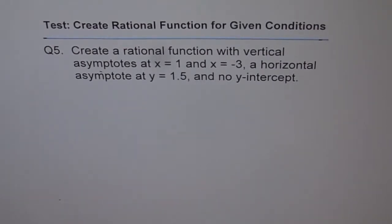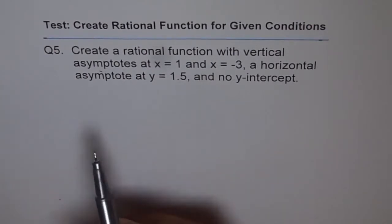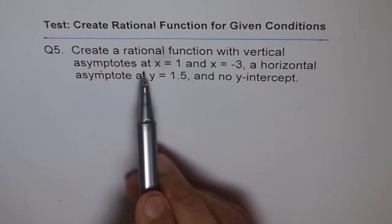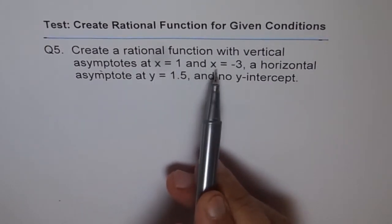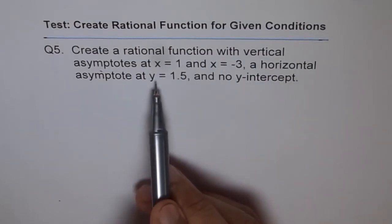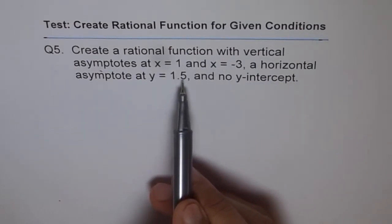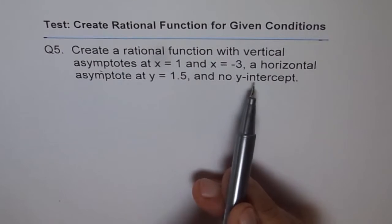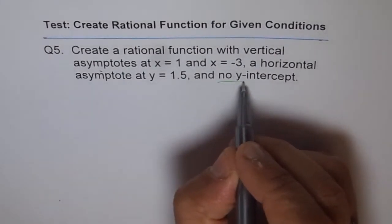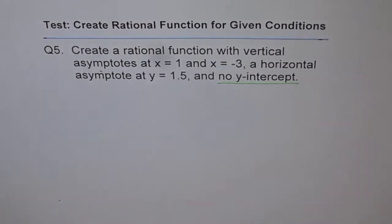Now this one is very different from all the four which you have done. Let's go through it. Create a rational function with vertical asymptotes at x equals 1 and x equals minus 3, a horizontal asymptote at y equals 1.5, and no y-intercept. That's kind of a very typical thing for this particular example.